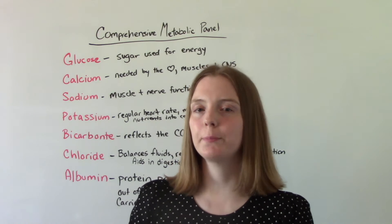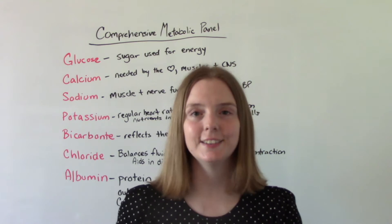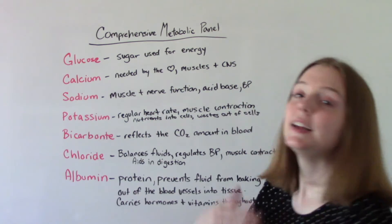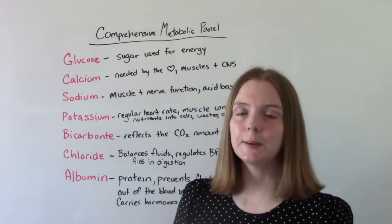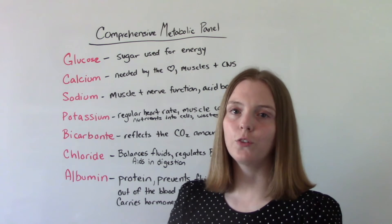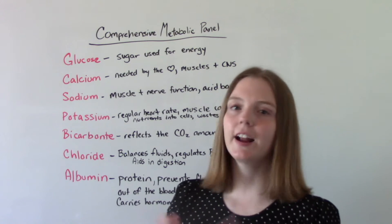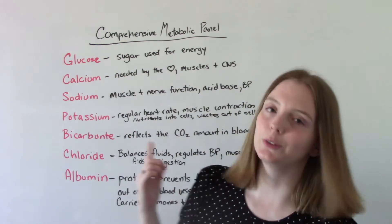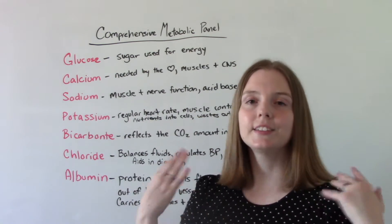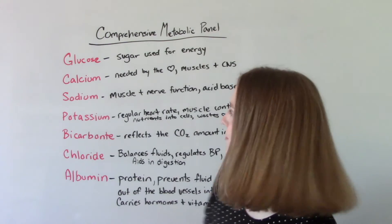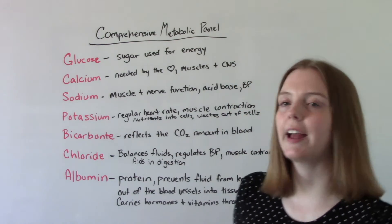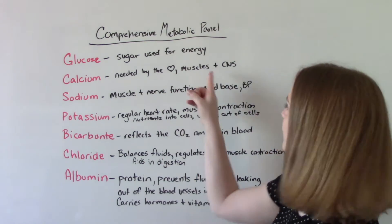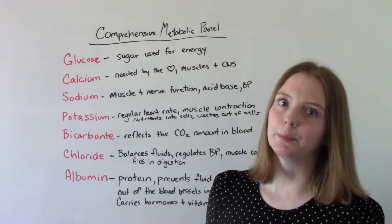A comprehensive metabolic panel tests for 14 different things. Here are the first seven — I'll talk about the next seven after. Typically when we get a CMP done, we are checking for things that affect the liver and the kidneys. First is glucose — we know glucose, it's the sugar that we use for energy. Calcium is very important to have in our body; we need it for our heart, our muscles, and for our nervous system to work properly.